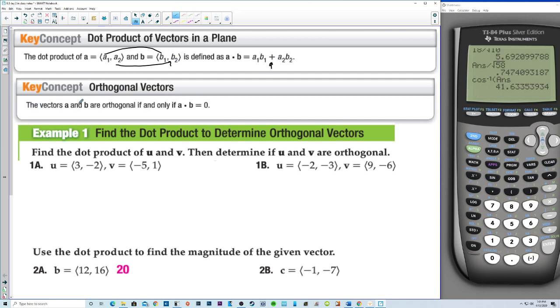Orthogonal vectors. If vectors a and b are orthogonal, if and only if a dot b is equal to 0.